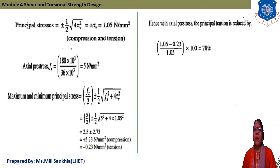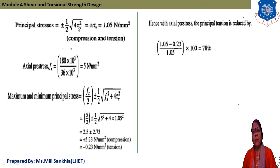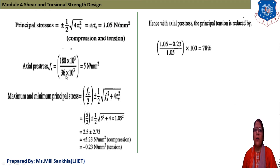Without prestress, the principal stress equation simplifies since f_x = 0, giving: f = ± (1/2)√(4·tau_v²) = ± tau_v = ±1.05 N/mm². Next, we find the actual prestress: f_x = P/A = (180 × 10³) / (36 × 10³) = 5 N/mm² (compressive).